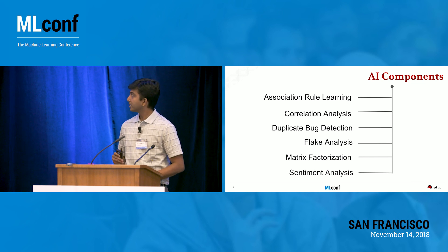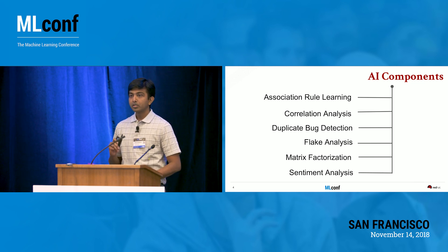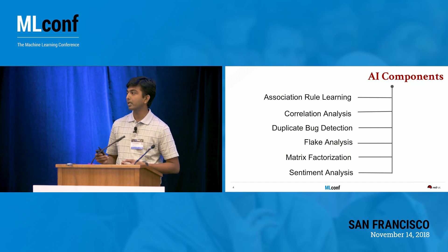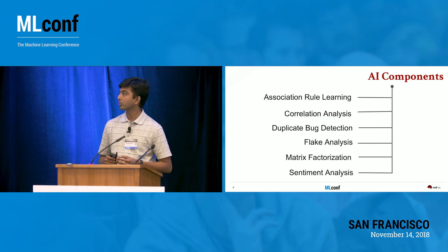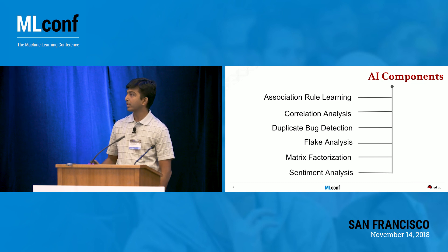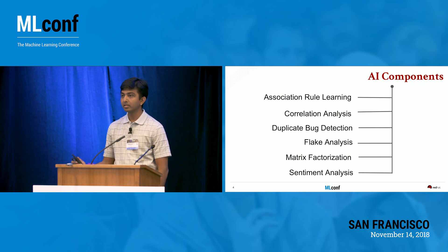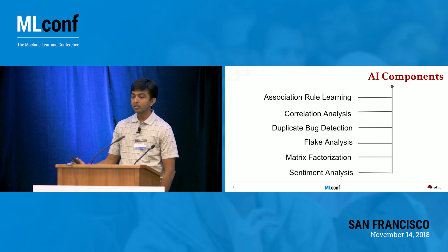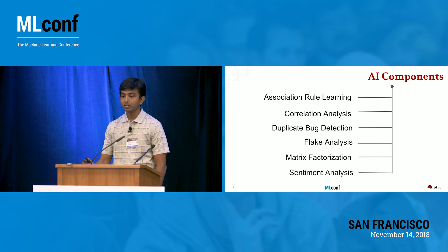Finally, we have sentiment analysis, used to express opinions on natural language text, typically categorizing it into positive, negative, or neutral sentiments. These are not the only algorithms — there are a lot of others in the pipeline, from principal component analysis to Bayesian networks, which will be published pretty soon.